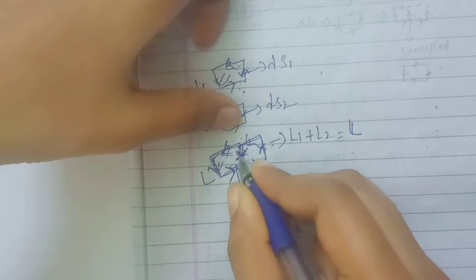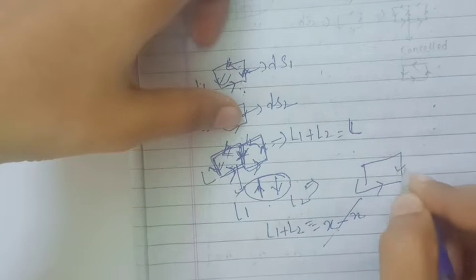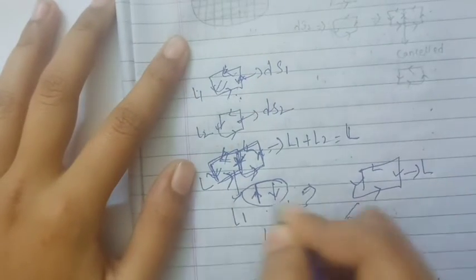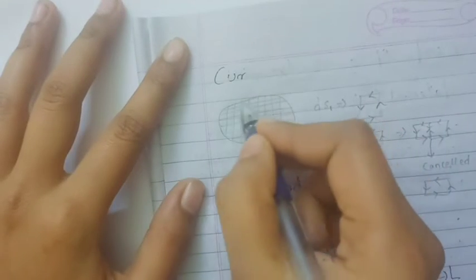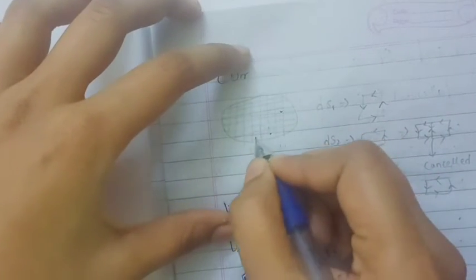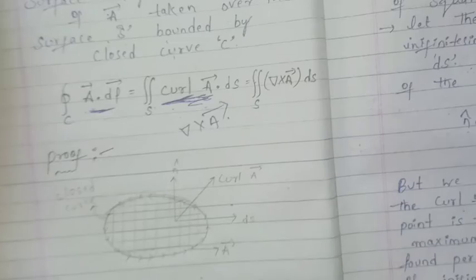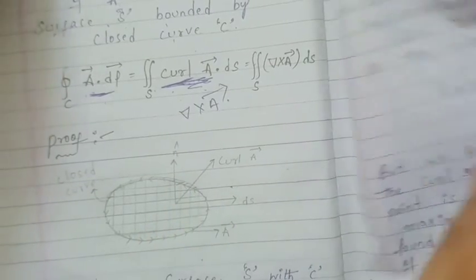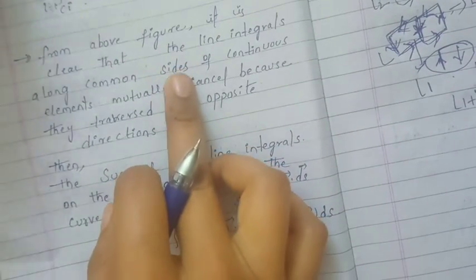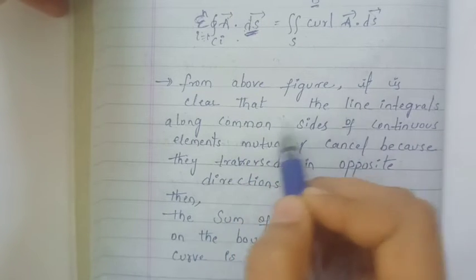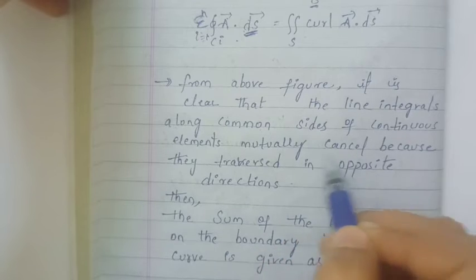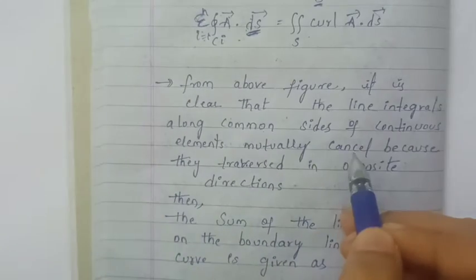Let us go through this line integral. The line integral changes along adjacent elements. Considering the boundary lines, the same way we are going to find out the line integral and add it — the shared interior sides cancel out in the same way, leaving only the outer boundary.